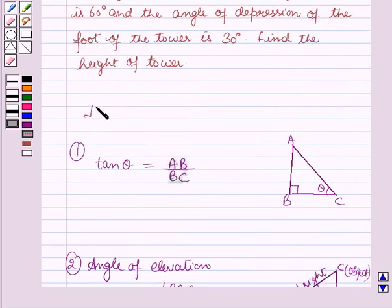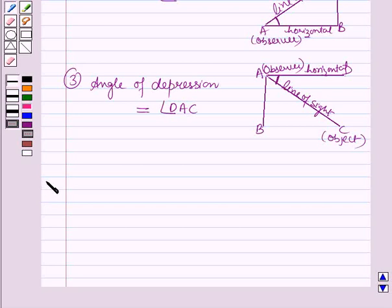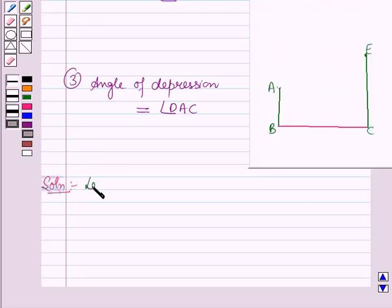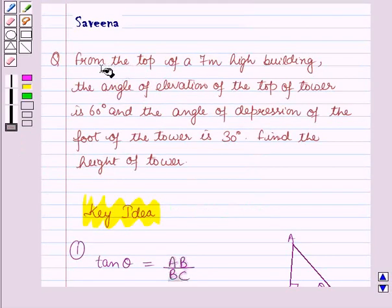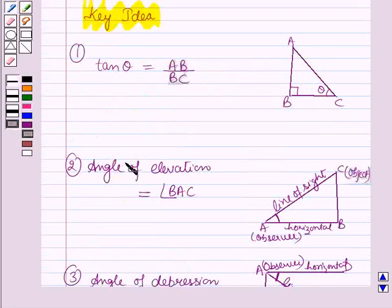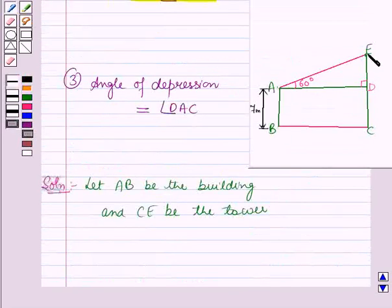These results will work as a key idea for solving this question. Now we will start with the solution. Let AD be the building and CE be the tower. It is given that from the top of the 7 meters high building, the angle of elevation of the top of the tower is 60 degrees and the angle of depression of the foot of the tower is 30 degrees. Using the key idea, angle EAD is equal to 60 degrees.